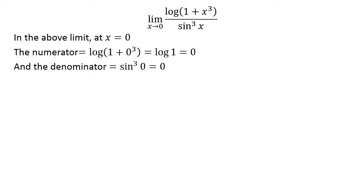In the above limit, at x equals 0, the numerator is equal to log of 1 plus 0 cubed equals log 1 equals 0, and the denominator is sine cubed 0 equals 0.